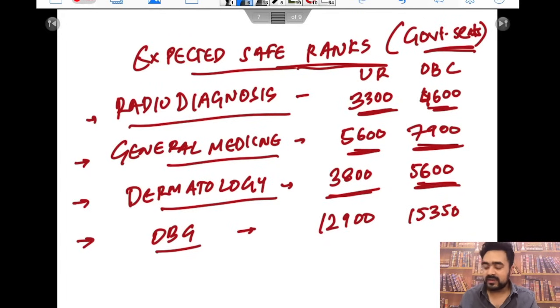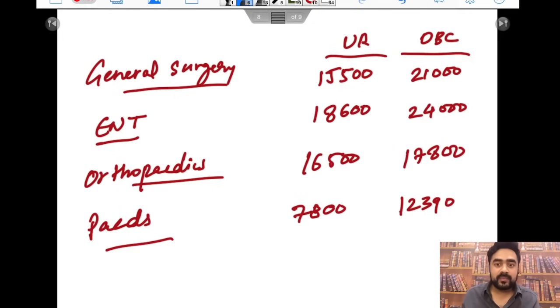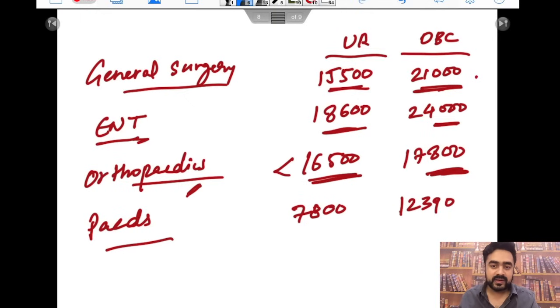For OBG, rank you can get around 12,900. If you are getting a rank under 12,000 or 13,000, there is a chance you can get a government seat. For OBC, 15,350. Now for General Surgery in a government seat, 15,500 if you are Unreserved candidate, and for OBC 21,000 rank you can expect a General Surgery seat. For ENT, 18,600 and 24,000. For Orthopedics, 16,500 if you are getting a rank under 16,500, and 17,800 for OBC candidate, you can expect a government seat.